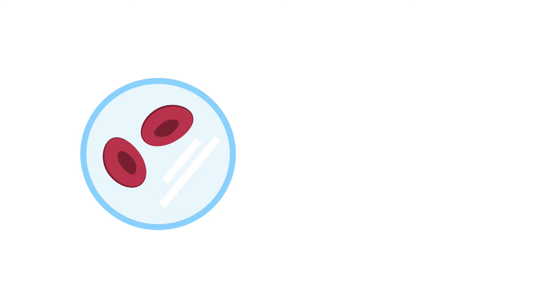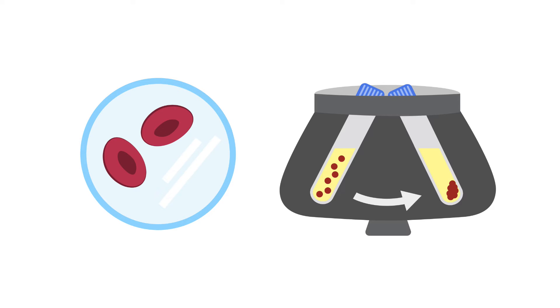Hematuria may be grossly visible or microscopic. Microscopic hematuria is commonly defined as the presence of two or more red blood cells per high-powered field in a spun urine sediment.